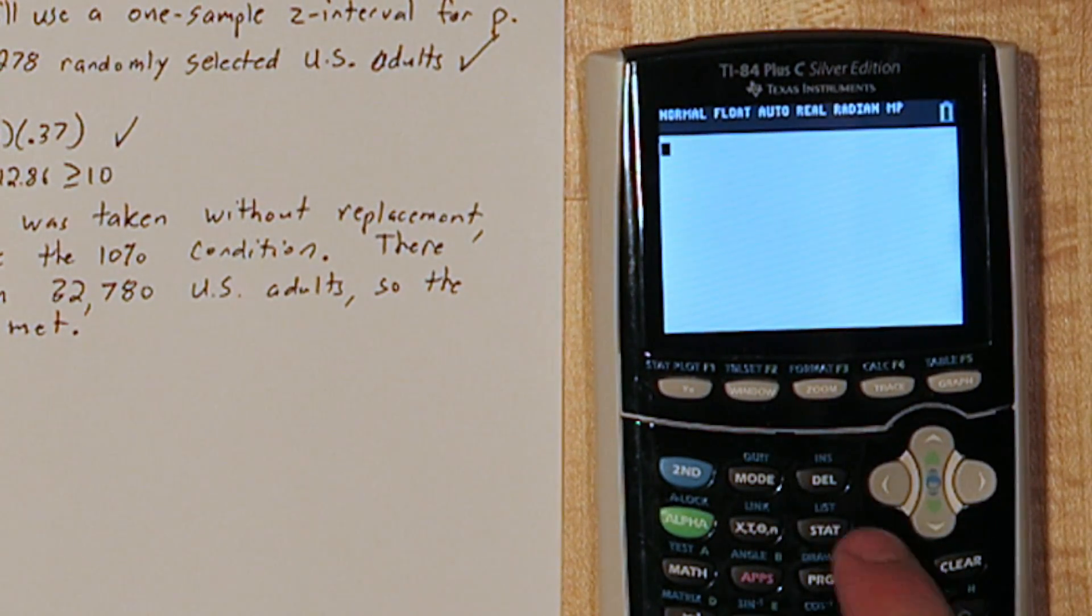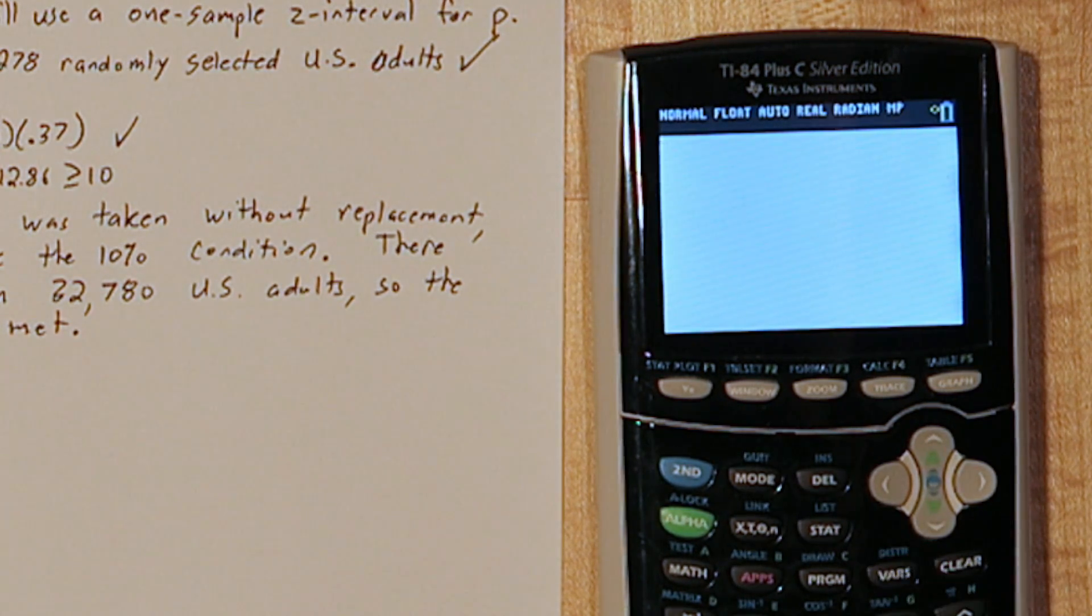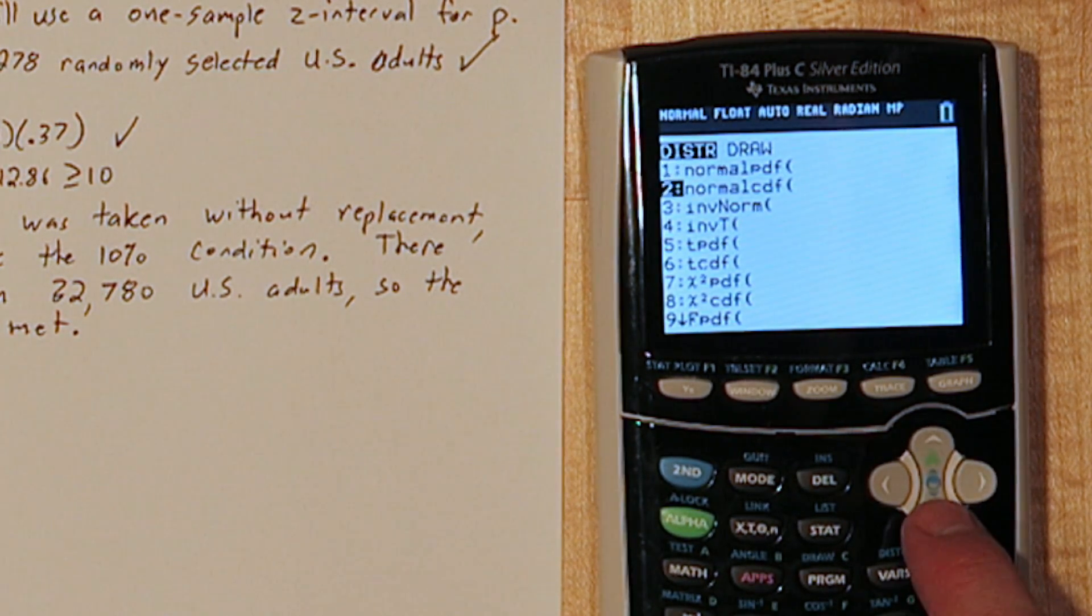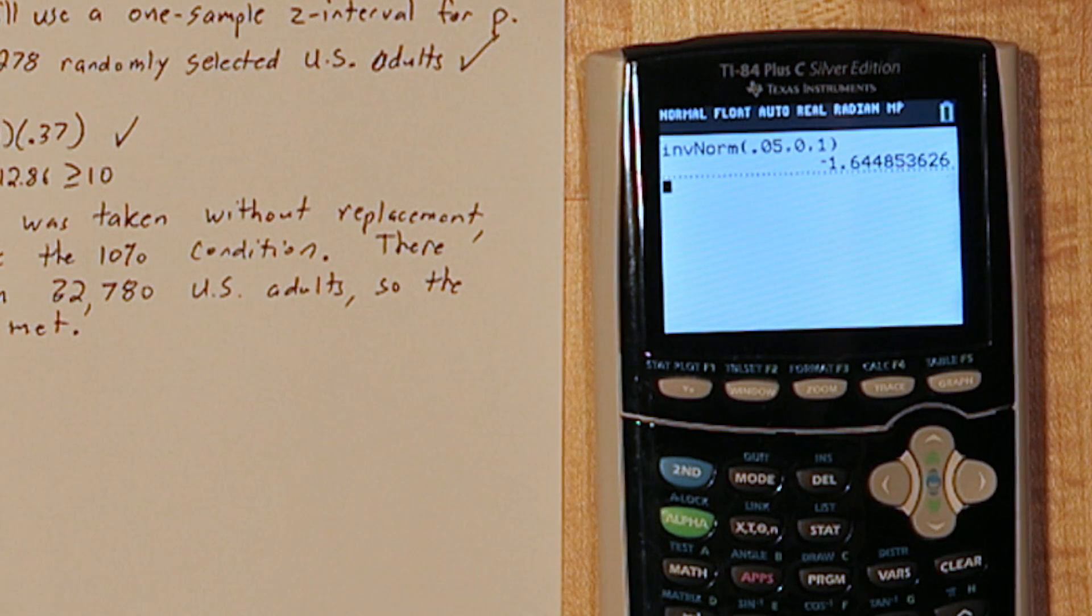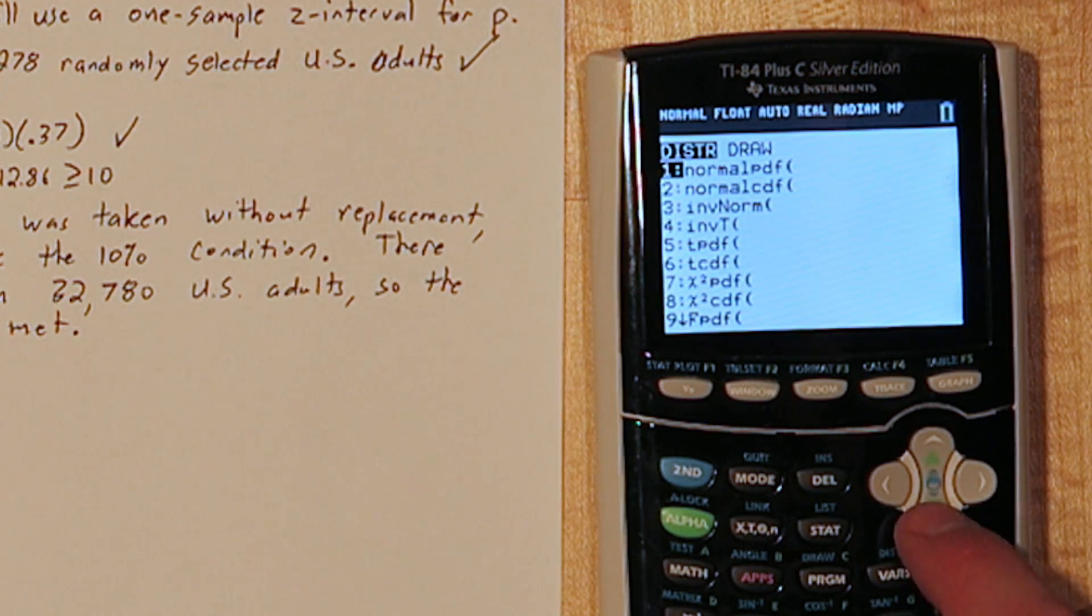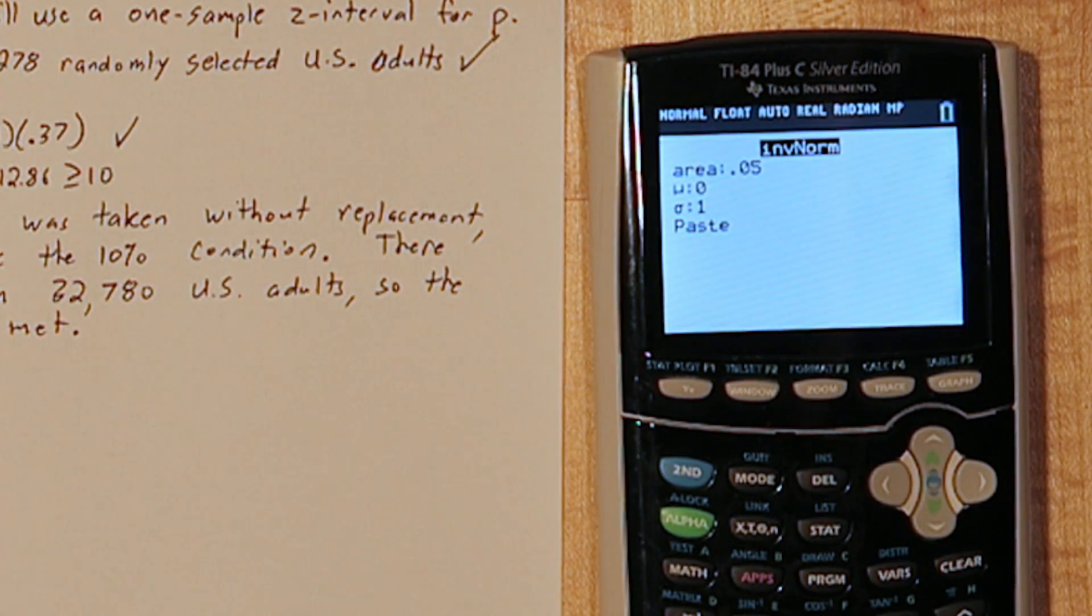To do this on the calculator press 2nd VARS. That gets you to the distribution menu. Go down to inverse norm and input the area of .05. Leave the mean and standard deviation as 0 and 1. There's the negative critical value. We can do this again using .95 to get the positive critical value.